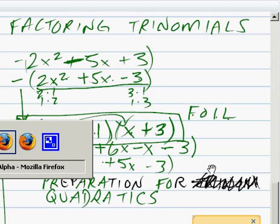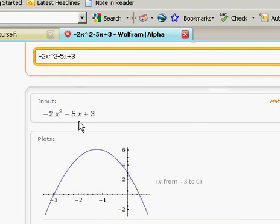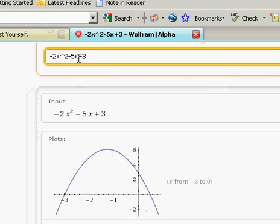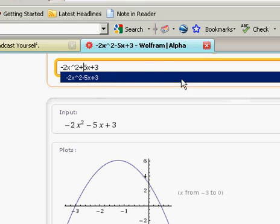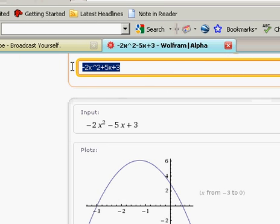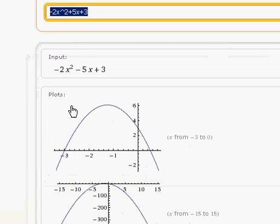All right, let's take that equation over to Wolfram Alpha and make sure we've got it entered correctly. Negative 2x to the second power minus 5x plus 3. Is that correct? No, this was a positive here. All right, now let's try it. And what kind of parabola do you think it's going to plot? It's going to cup or is it going to mountain?